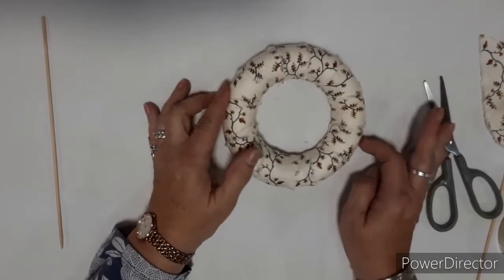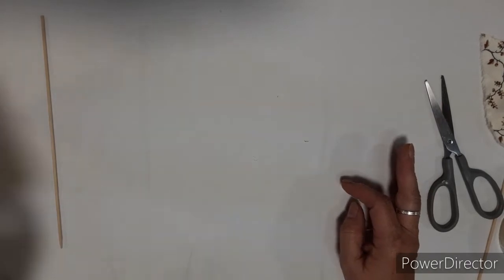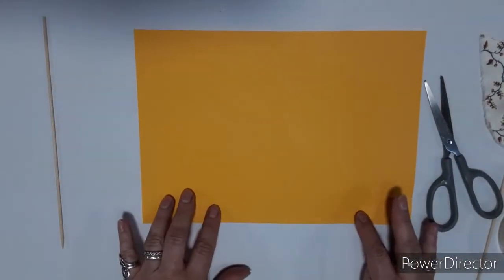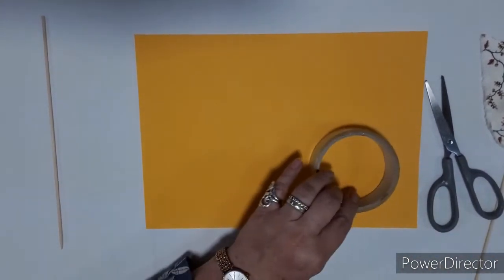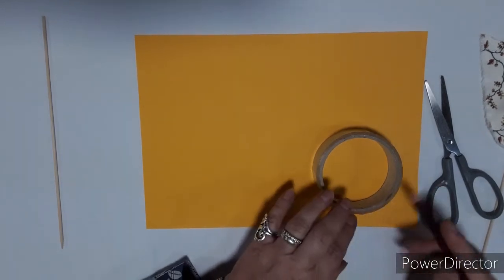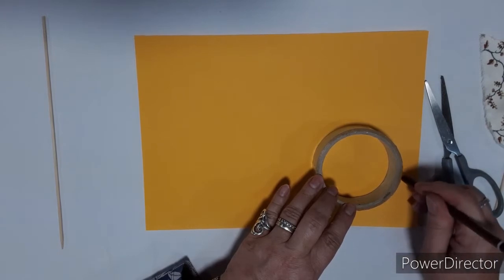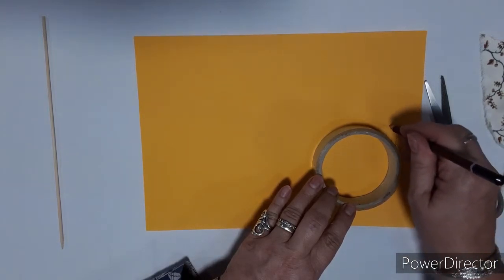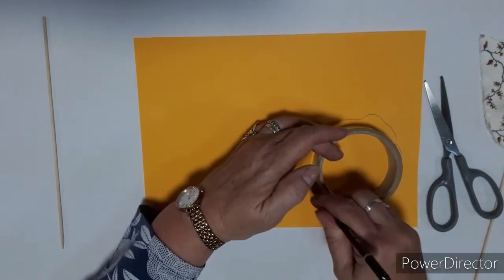So you can set that to one side and the next thing we're going to do is make paper flowers. Take a piece of the colored paper and I'm going to draw a rough circle. So anything that you've got circular at home, we've got some tape here and it's going to be rough, it's not actually really going to be that circular because this is going to be a rose so you want a natural kind of edge so it can be a bit wiggly and off.